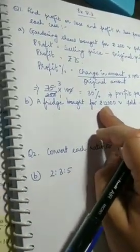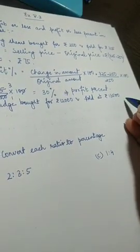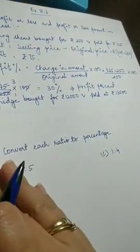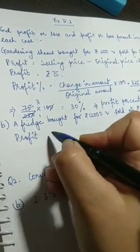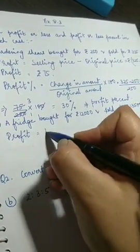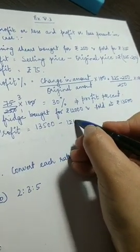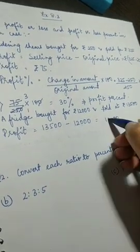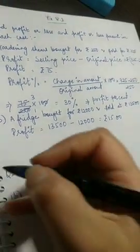Similarly in the next question, fridge was bought for rupees 12,000 and sold at 13,500. Again we can see that this is a larger amount so profit will come. So profit is equal to 13,500 minus 12,000 which is 1,500 rupees. This is our first part answer.